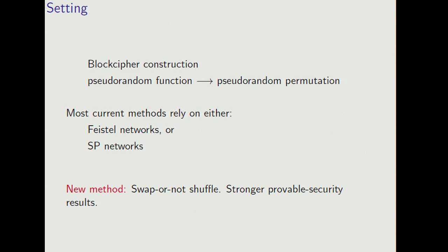In block cipher construction and the related problem of constructing a pseudorandom permutation from a pseudorandom function, most current methods rely on either variants of Feistel networks or substitution permutation networks. Today, I'm going to introduce a new method, which we call swap-or-not, for which we can prove stronger security results.